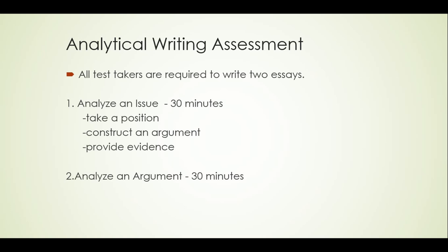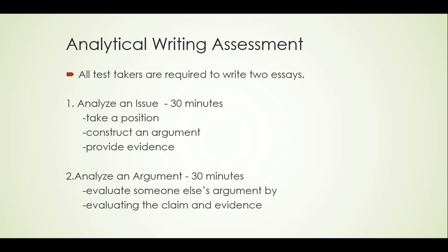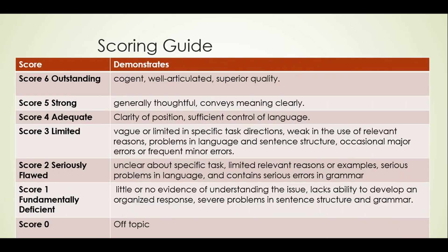The second task is called Analyze an Argument. You have 30 minutes to complete it. You are provided with an argument and you have to evaluate that argument's claims and evidence. Here is how this section is scored: your essays are scored on a range of 0 to 6.